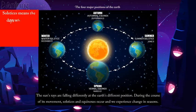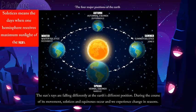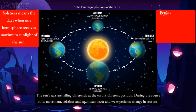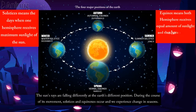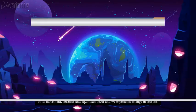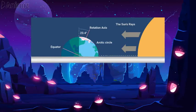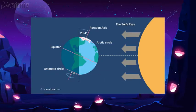Solstice means the days when one hemisphere receives maximum sunlight from the sun, while equinox means both hemispheres receive an equal amount of sunlight and therefore have equal day and night.